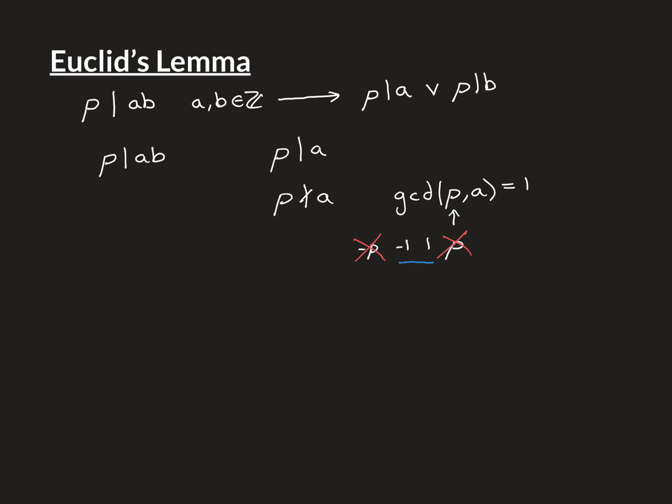And that list of four things was the list of all things that divide P. And we've taken these two away because they don't divide A. So now this is the list of common divisors of P and A. And therefore, the greatest of those is going to be 1. So that's how we know that the greatest common divisor of P and A is equal to 1 if it's true that P doesn't divide A.